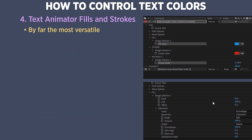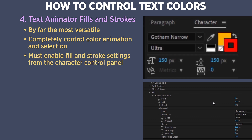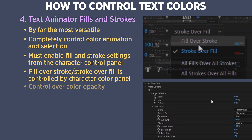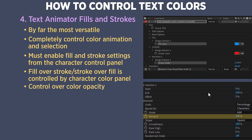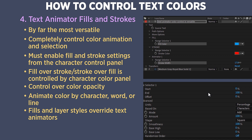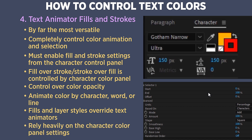Text animator fills and strokes are the most versatile, giving complete control over animating text color — including per character, word, or line. Remember to enable fills and strokes in the character panel, otherwise stroke attributes won't work and fill won't be visible. To control stroke over fill or fill over stroke, use the character panel settings since the text animator has no such setting. Control color opacity via the Amount property under advanced, and choose character, word, or line targeting via the 'based on' setting. To avoid color fading between segments, set ease high to 100 and ease low to negative 100. Note that fills and layer styles will override text animator fills and strokes.